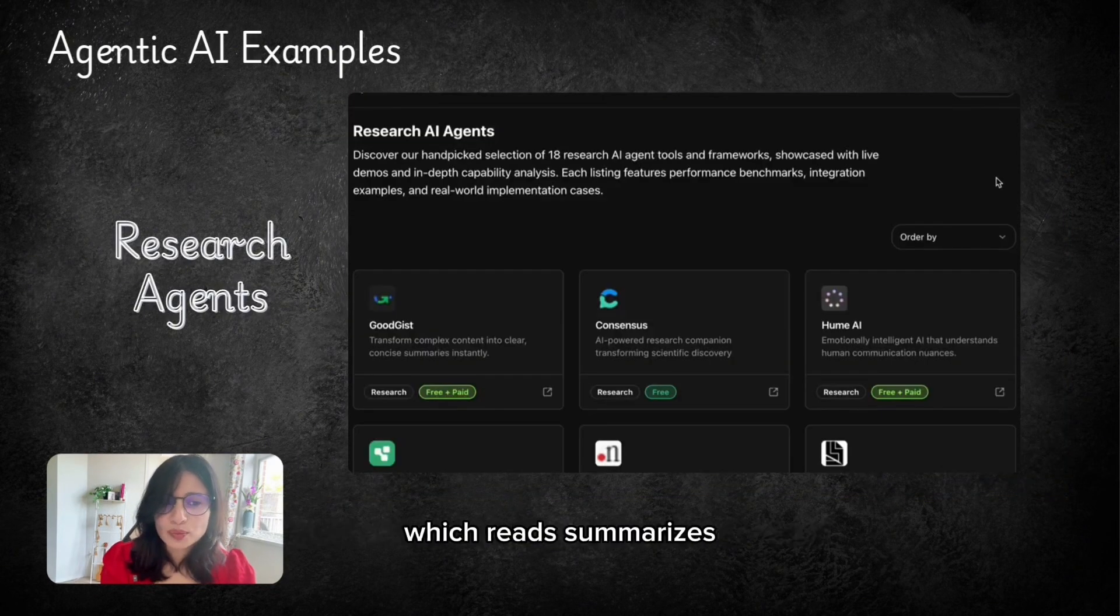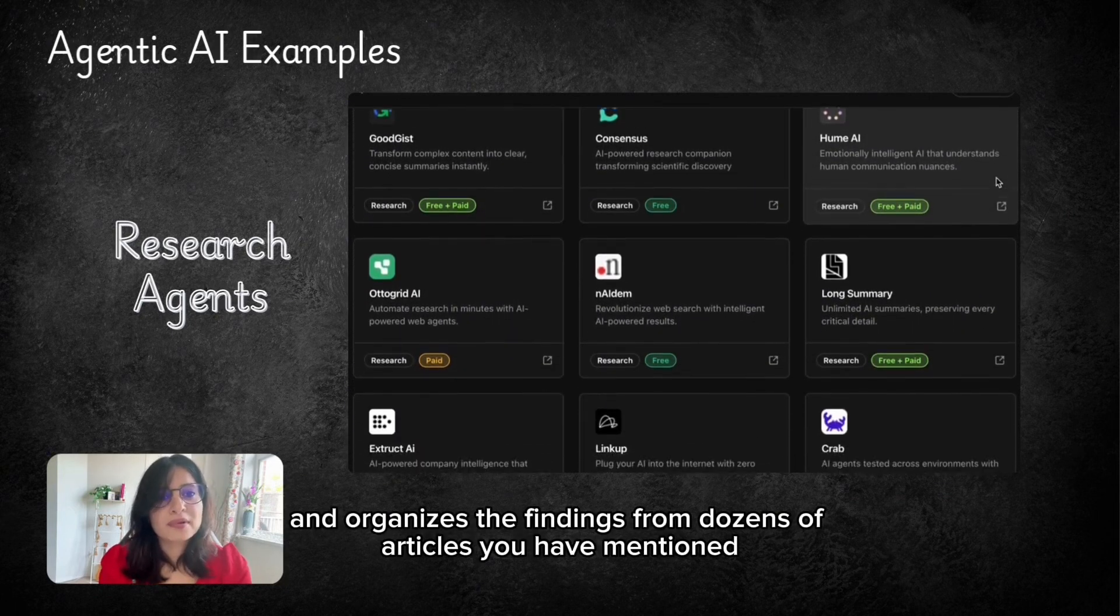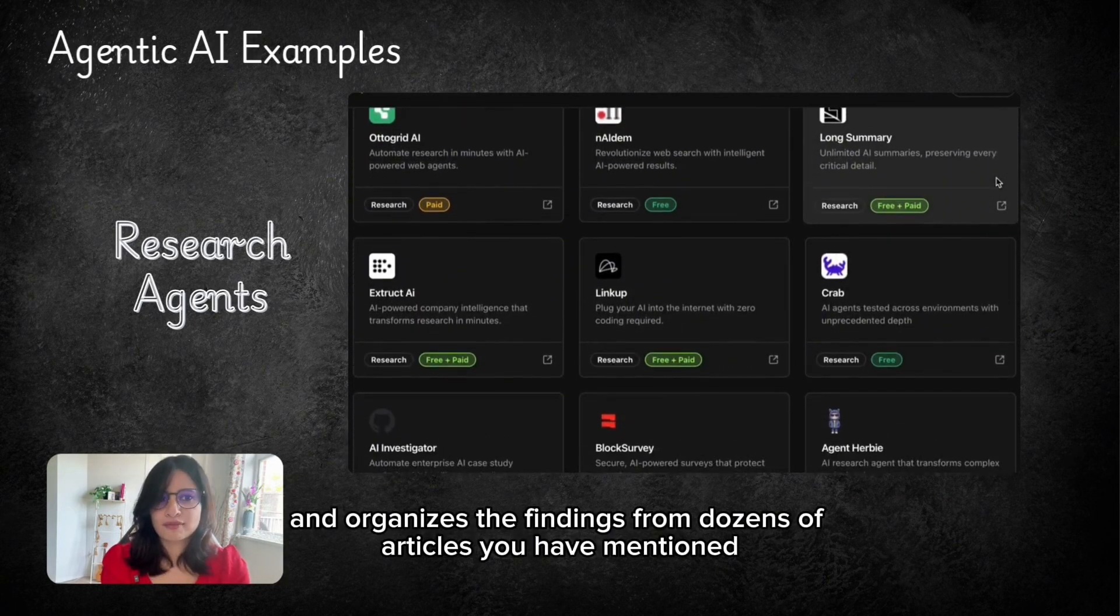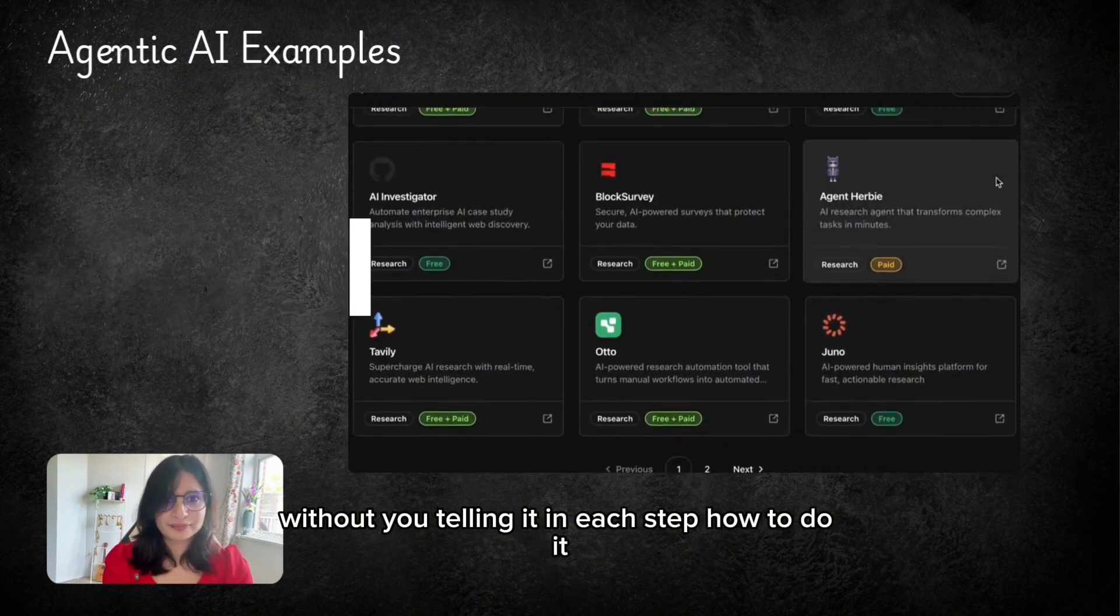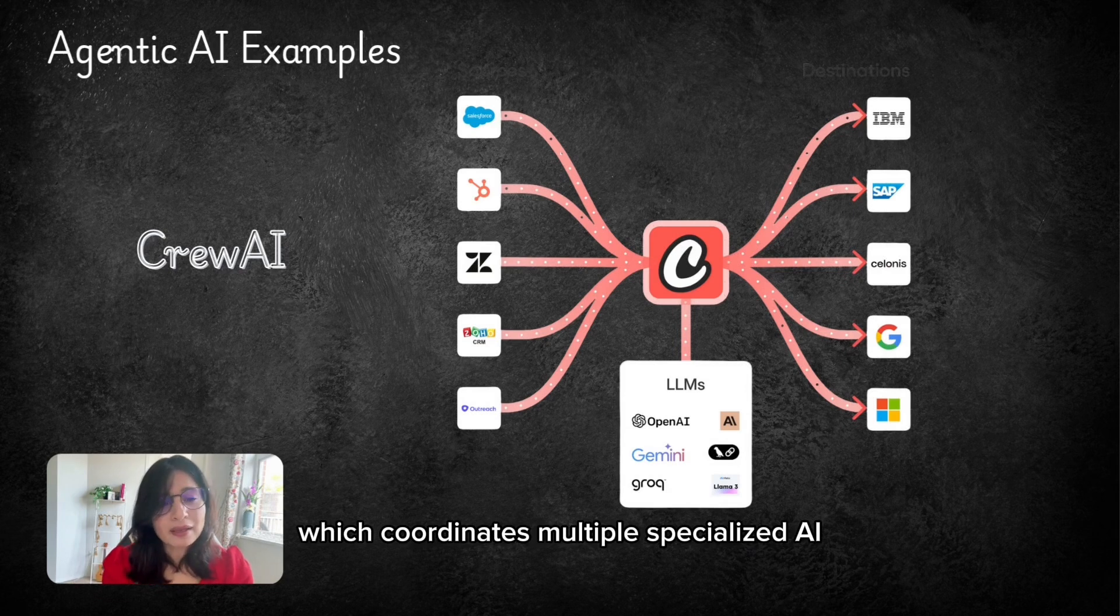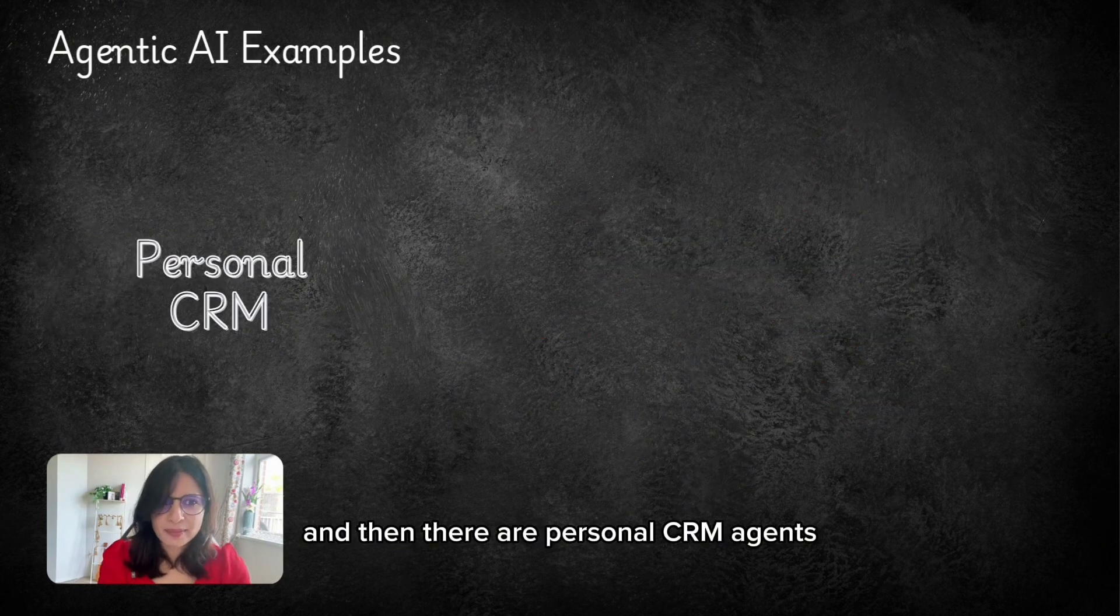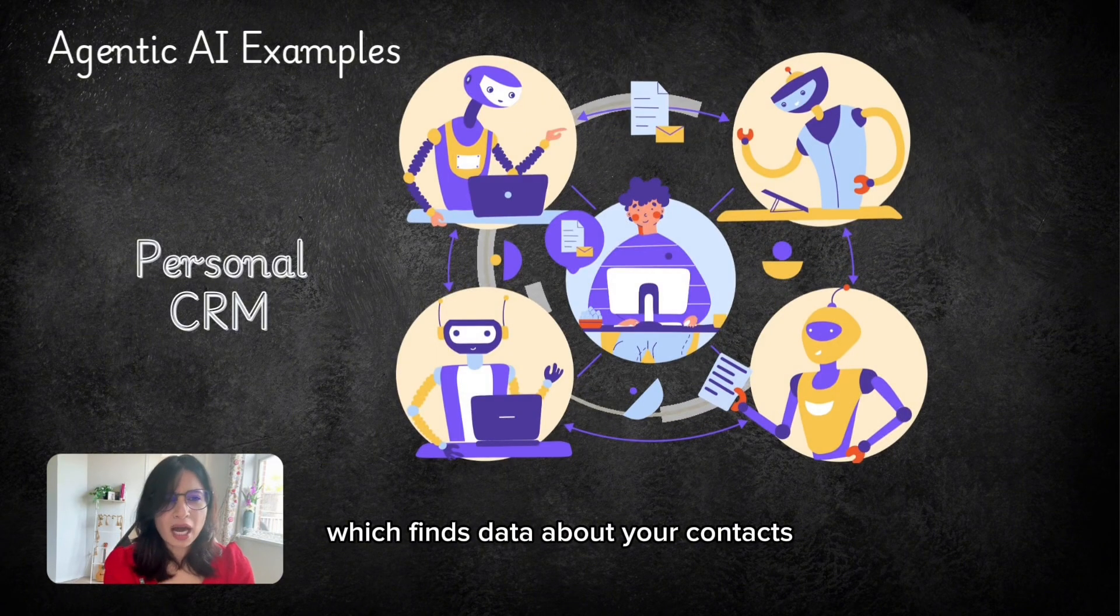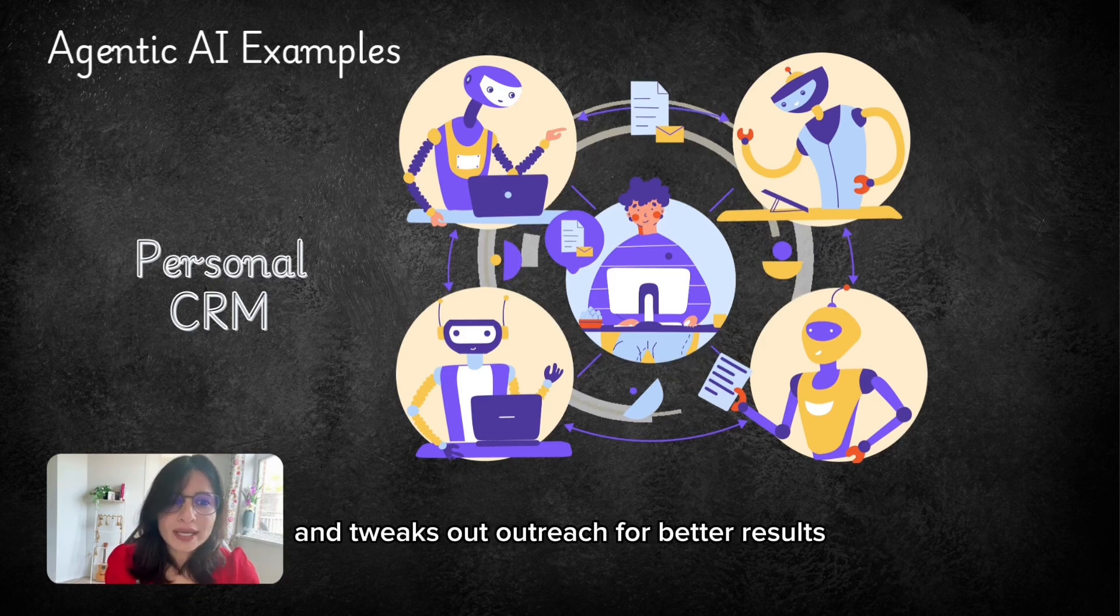Another example could be Research Agent which reads, summarizes and organizes the findings from dozens of articles you have mentioned without you telling it in each step how to do it. Another popular example is Crew AI which coordinates multiple specialized AI teams to solve complex business problems. And then there are Personal CRM Agents which finds data about your contacts, sends follow-ups, tracks responses and tweaks out outreach for better results.